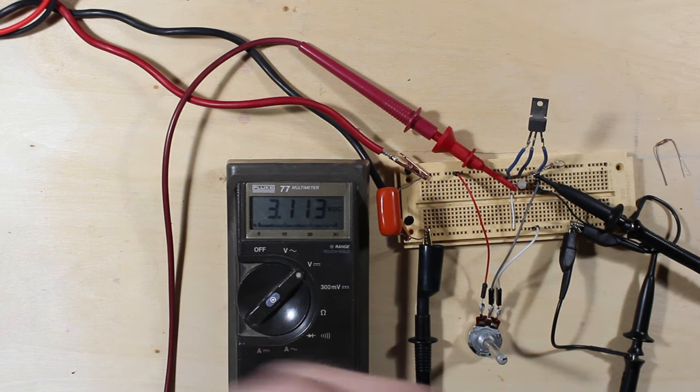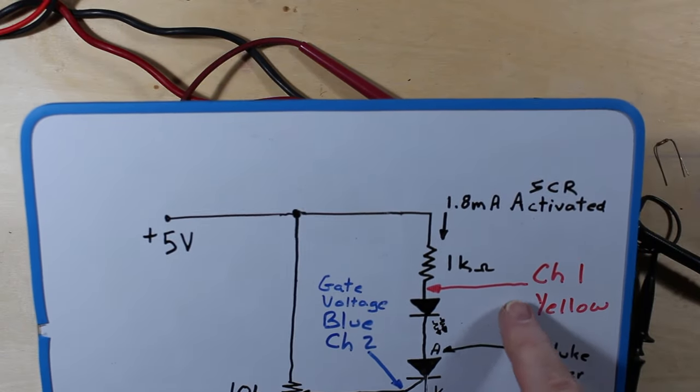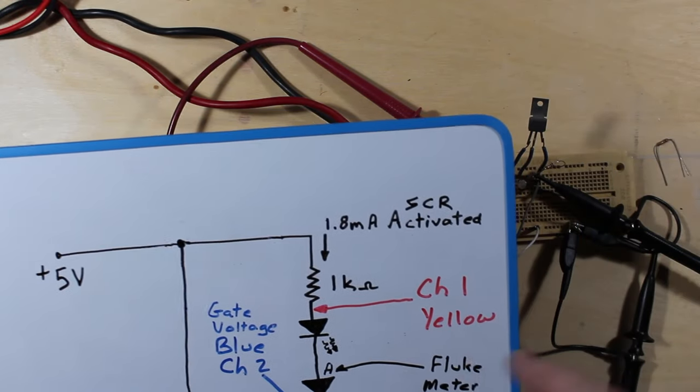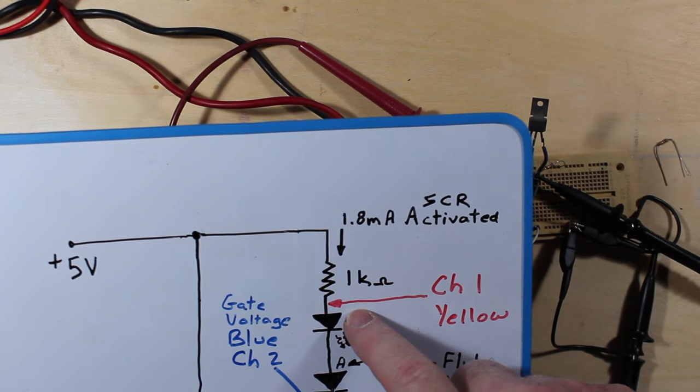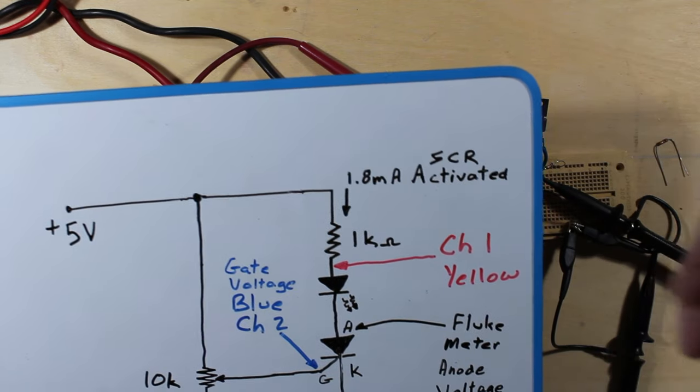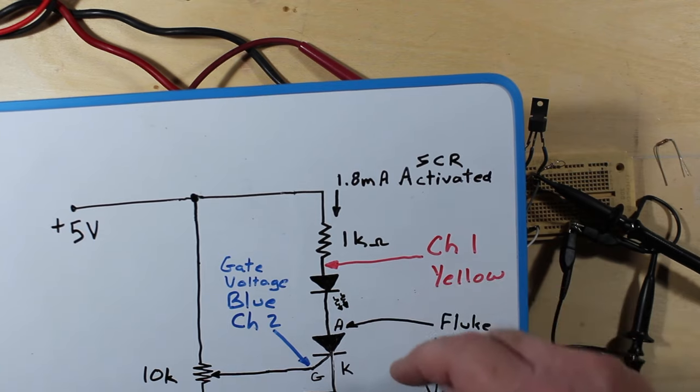I have the scope set up and we're going to have a look at, we're going to use channel one here, the yellow, and that's basically going to be our trigger. It's what's going to activate the scope once we get a certain situation.